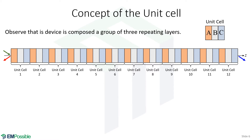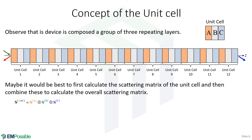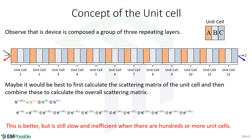This suggests a slightly better way to handle this type of device: calculate a scattering matrix by cascading A, B, and C to get one scattering matrix describing the unit cell, then cascade that 12 times. We're doing better — probably a lot better — but this is still inefficient. If there were a million repeated unit cells, it would still be very slow. It turns out there's something much neater we can do.